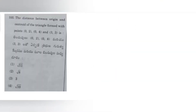Let us continue with question 105. The distance between the origin and the centroid of the triangle formed with points (0,2), (0,4) and (3,3) is? We need to find the distance between the origin and the centroid. The triangle vertices are given; let us call them A, B, C.